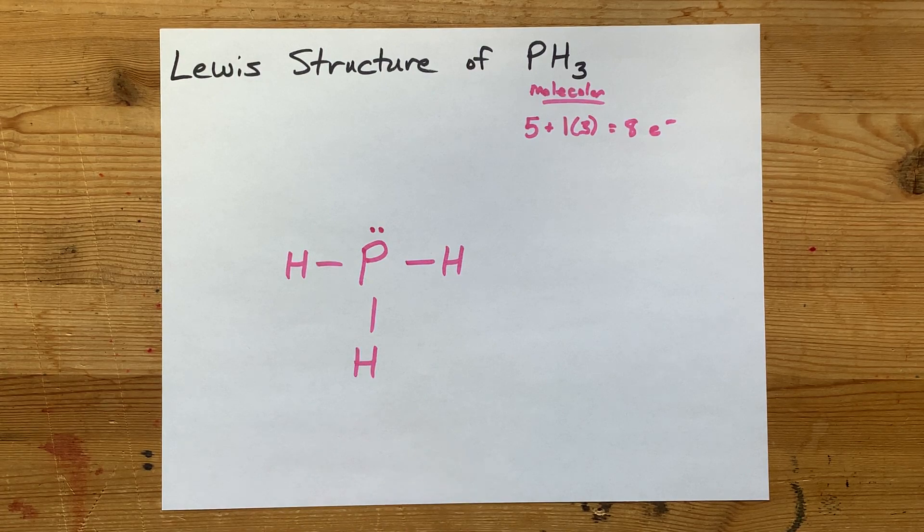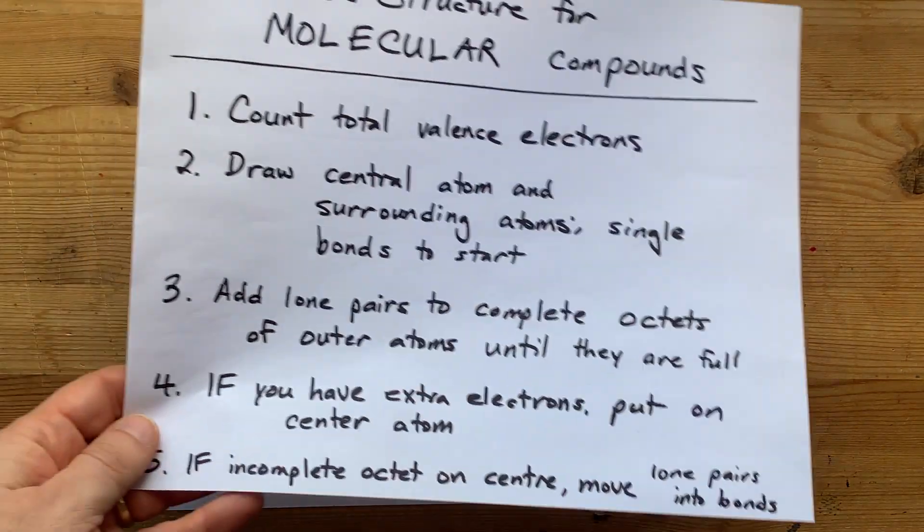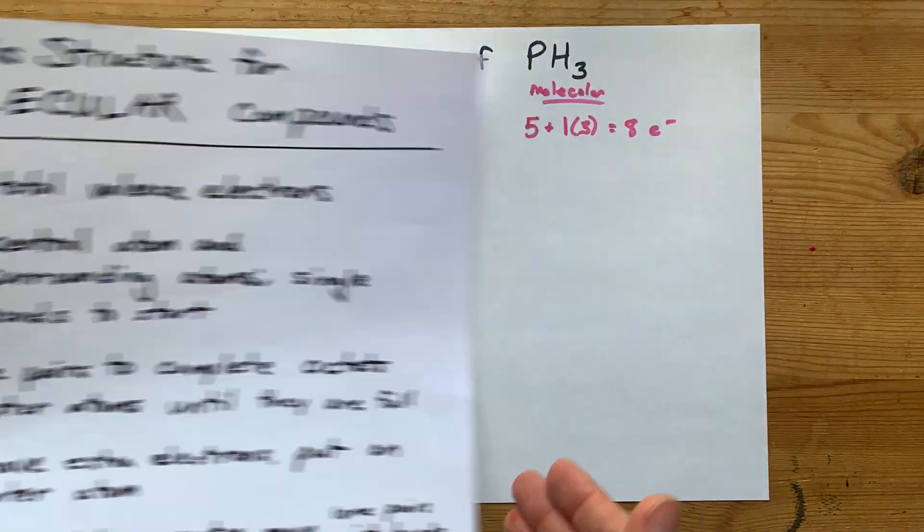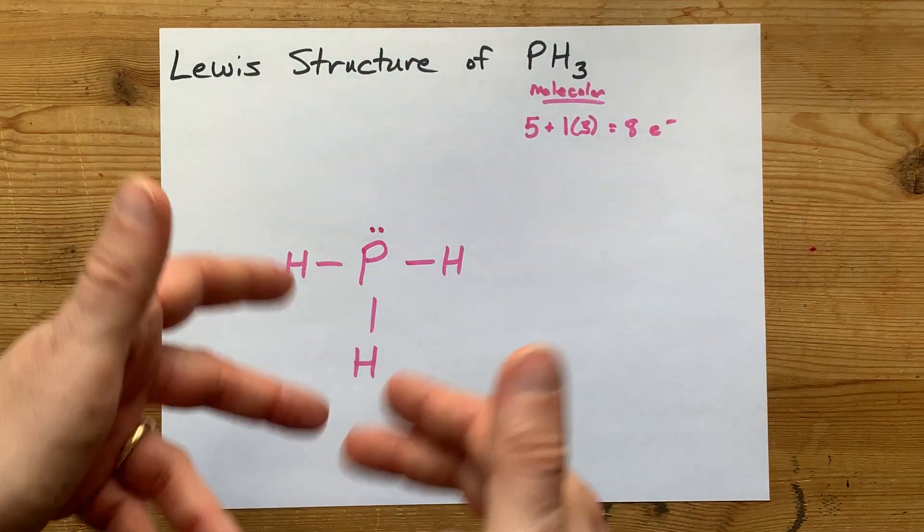That's the Lewis structure for PH3. Thank you for being with me. You can use this method for any molecular compound. Best of luck.